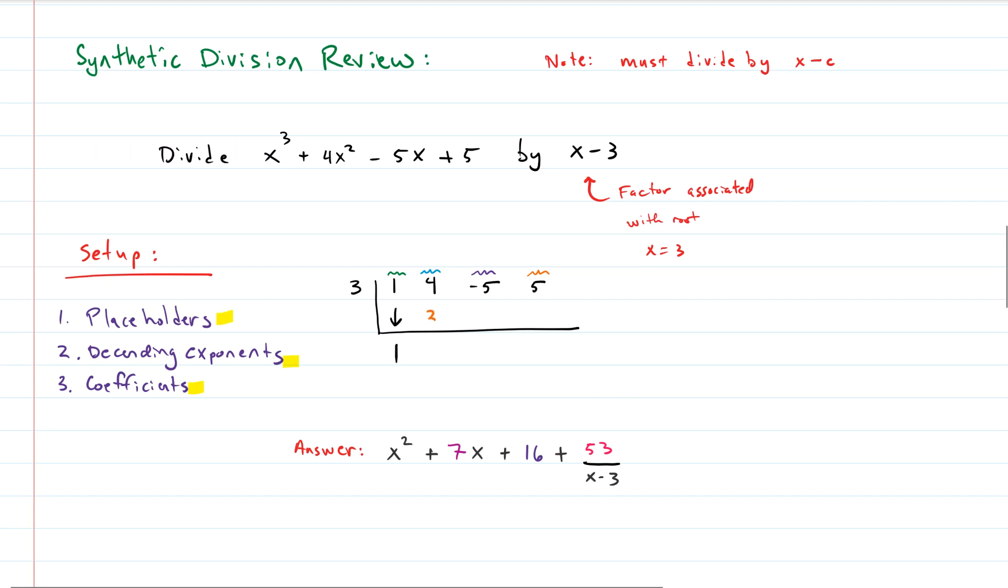So 3 times 1 gives us 3. We add and we get 7. Then 3 times 7 gives us 21. We add and we get 16. Then 3 times 16 gives us what? 48. And we add and we get 53. And then we can write out the answer just like this. The thing that's important is that this right here is the remainder.